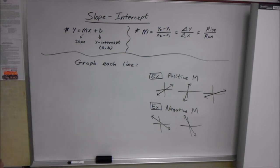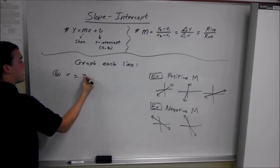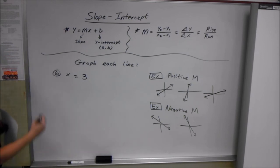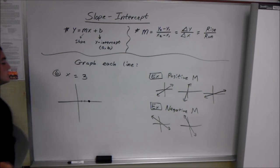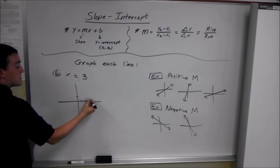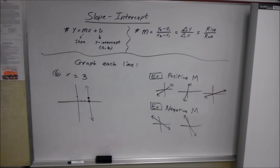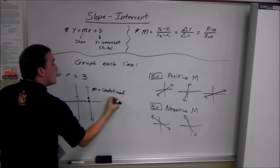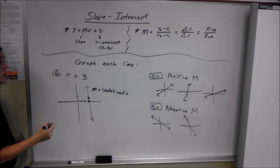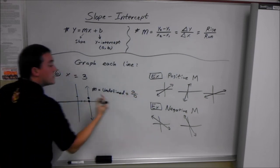Continuing on graphing lines, but not quite the same. Number 6: say we're just given x equals 3. If it says x equals 3, we know x is always going to be 3, so all of our x values are 3. This gives us a vertical line. Whenever you just have x equals a number, it's a vertical line, and the slope is undefined — because we have a rise but we run 0, and any number divided by 0 is undefined.